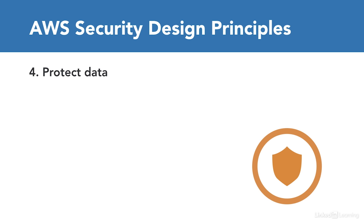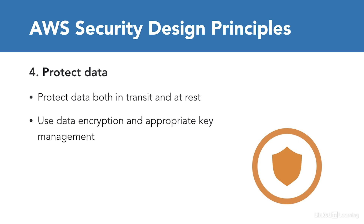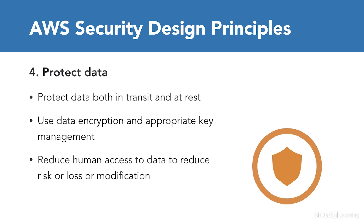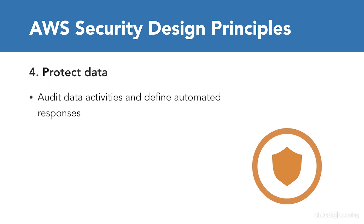The next design principle is to protect your data. Data is a business currency — it's key to protect your data both in transit and at rest. Use data encryption and appropriate key management, which will often include both files and non-relational and relational data. If possible, reduce human access to your data to reduce the risk of loss or modification. Finally, audit data activities around key data and define automated responses — for example, auditing if someone created a new user or modified the permissions of an existing user in an authentication store.